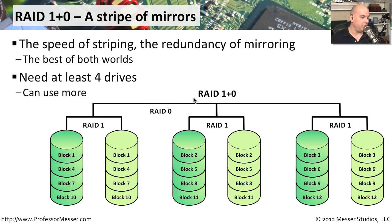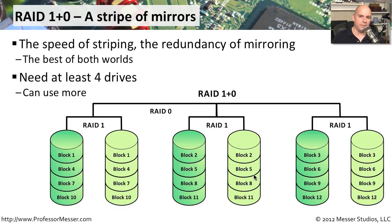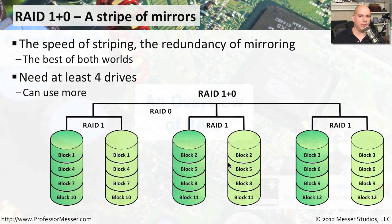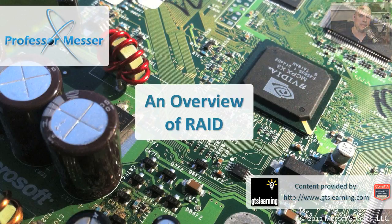Data is then striped across all those mirror pairs — block 1, block 2, and block 3 are striped across all the mirrors. If one stripe is lost, the mirror of that stripe is still available. This gives you the speed of striping combined with the redundancy of mirroring, without any parity calculations. You get the best of RAID 0 and the best of RAID 1 in a single configuration.